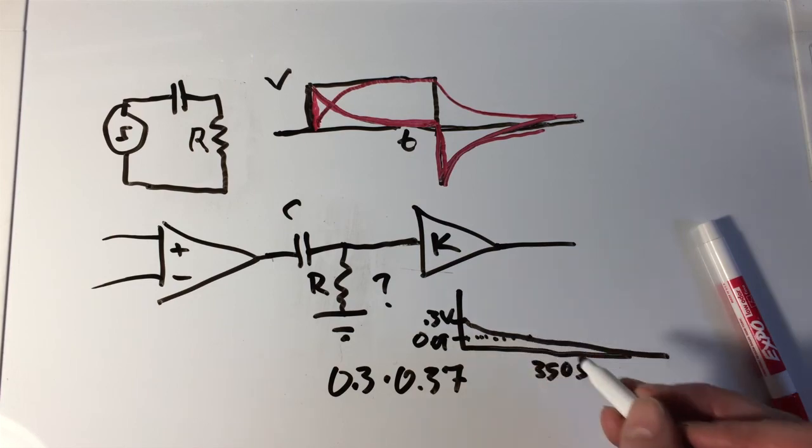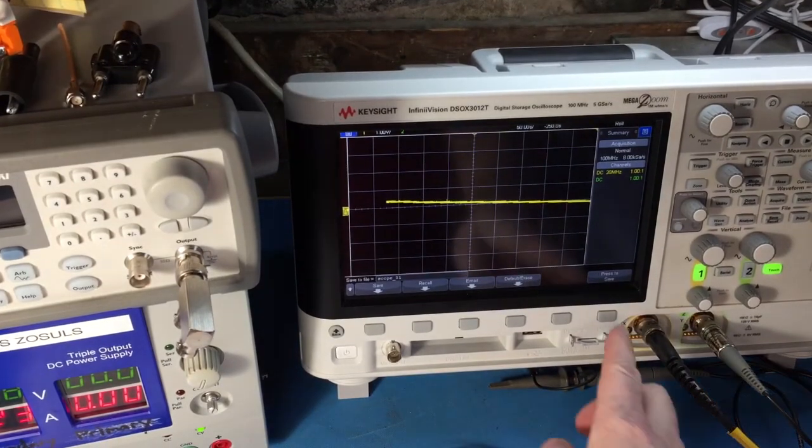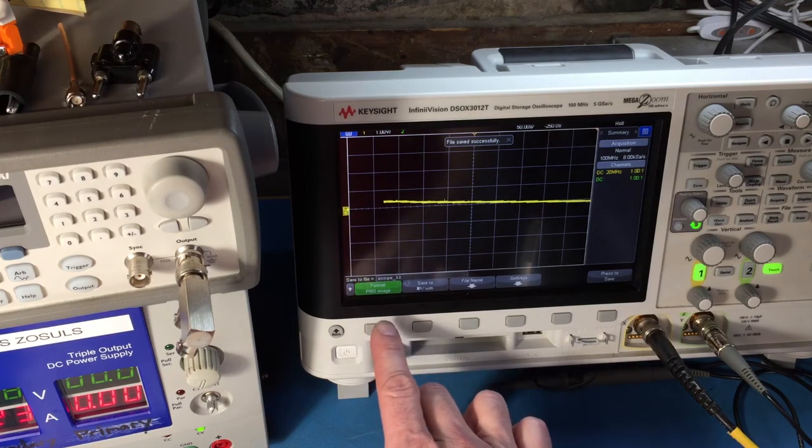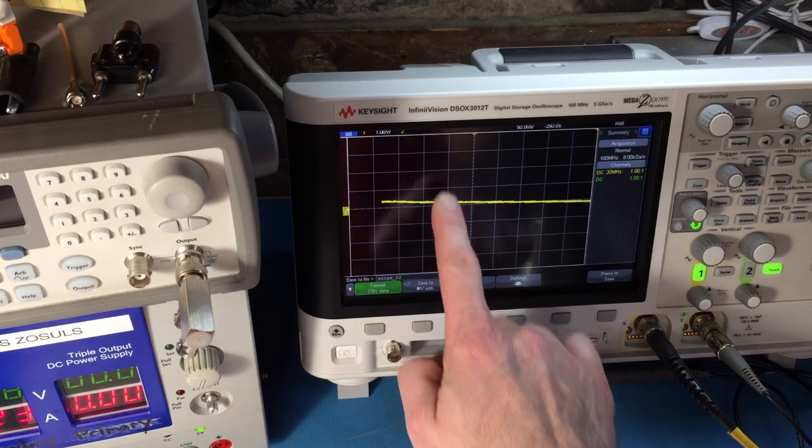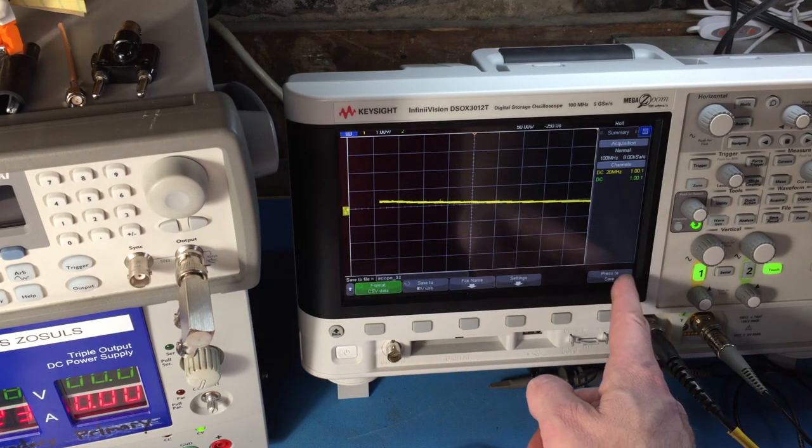So we could say that when we get to 0.09 volts-ish, we're going to have gone through one time constant. So what I could do is push save on the scope and we can analyze that data. I'm going to save it as a .png file, and then I'm also going to save it as a .csv file, because the .csv file will allow us to look at that and analyze it numerically.